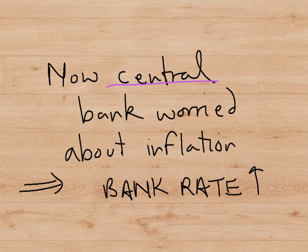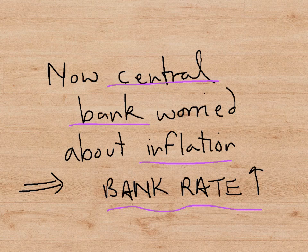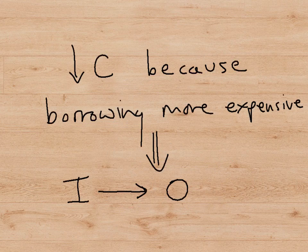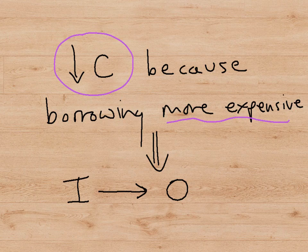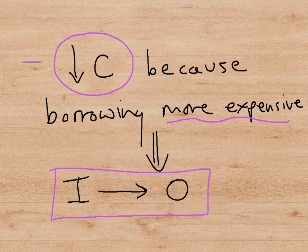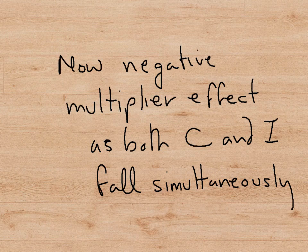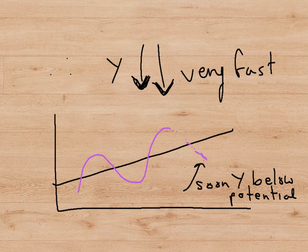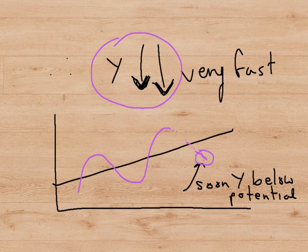If this happens, the central bank will now change its opinion about the future. It is no longer worried about economic growth — what it is worried about now is inflation. And in order to ward off inflation, the central bank will now do the reverse of what it did before. Instead of reducing the bank rate, it will increase the bank rate. As soon as it does this, everything will go into reverse. Borrowing is now more expensive, so consumers will borrow less. But as soon as the change in consumer spending becomes negative, investment spending, according to the accelerator theory, will drop to zero. So now, both consumer spending and investment spending are both falling at the same time. We will have a negative multiplier effect, so instead of rising fast, the income or output of the country will start falling very fast. Very soon, the output of the country may be below its potential.